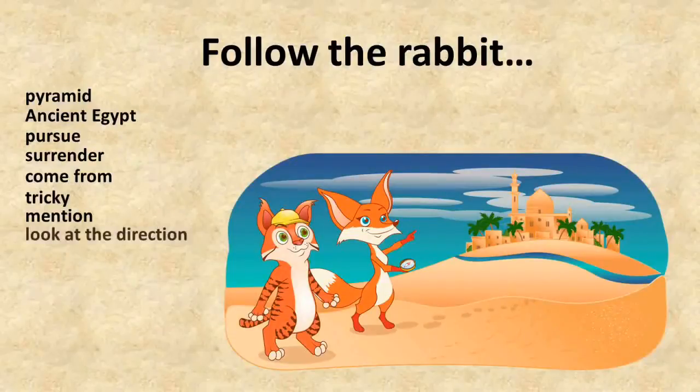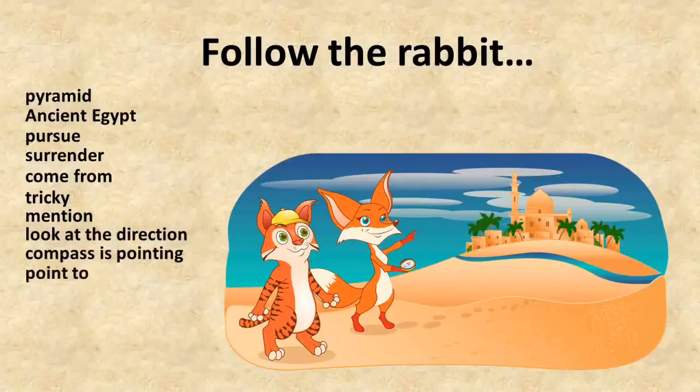The friends looked at the direction the compass was pointing. Alice looked up and pointed to the ancient city on the riverbank. Alex and Alice realized that the rabbit went to this city and followed after him.